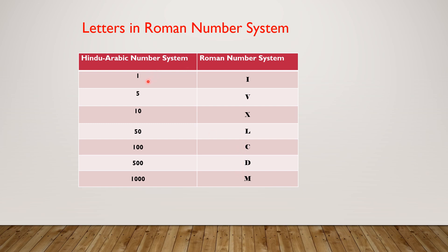Let's view them. One is represented by I. Five is represented by V. Ten is represented by X. Fifty is represented by L. One hundred is represented by C. Five hundred is represented by D. One thousand is represented by M.